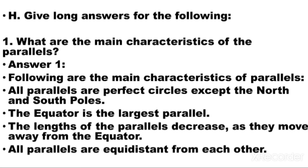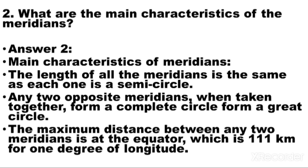Question number 8: give long answers for the following. Question number 1: What are the main characteristics of parallels? Answer: All parallels are perfect circles except the North and South Poles. The equator is the largest parallel. The lengths of the parallels decrease as they move away from the equator. All parallels are equidistant from each other. Question number 2: What are the main characteristics of the meridians? Answer: Number 1, the length of all the meridians is the same as each one is a semicircle. Number 2, any two opposite meridians when taken together form a complete great circle. Number 3, the maximum distance between any two meridians is at the equator, which is 111 km for one degree of longitude.